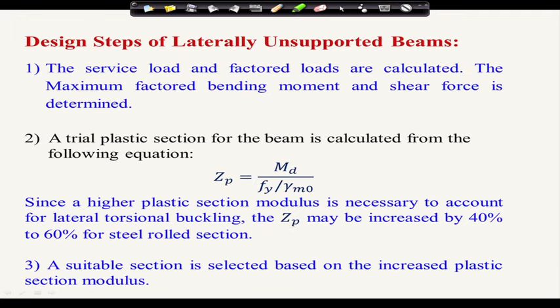Based on the last lecture, we will follow certain design steps and then go through one example. In the design steps, we will first find an appropriate section based on approximate section modulus, then check whether the assumed section is safe against bending forces, then check for shear, and then check deflection, web buckling, and web crippling.